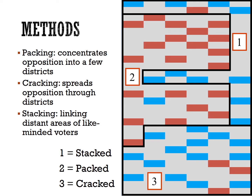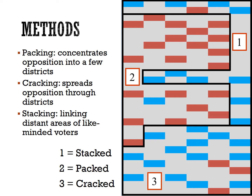Using a visual example: District 1 has been stacked, connecting a lot of blue areas that aren't geographically close to one another. District 2 has been packed, combining an overwhelming amount of red so that they will easily win this district but aren't competitive in the other two. The reds in District 3 have been cracked so they are nowhere near a majority. So in this abstract example, regardless of political parties, candidates, voter turnout, or the issue, the blues win two districts and the reds win one every time. This is why some argue that gerrymandering discourages full democratic participation — because election outcomes are determined before any votes are actually cast.